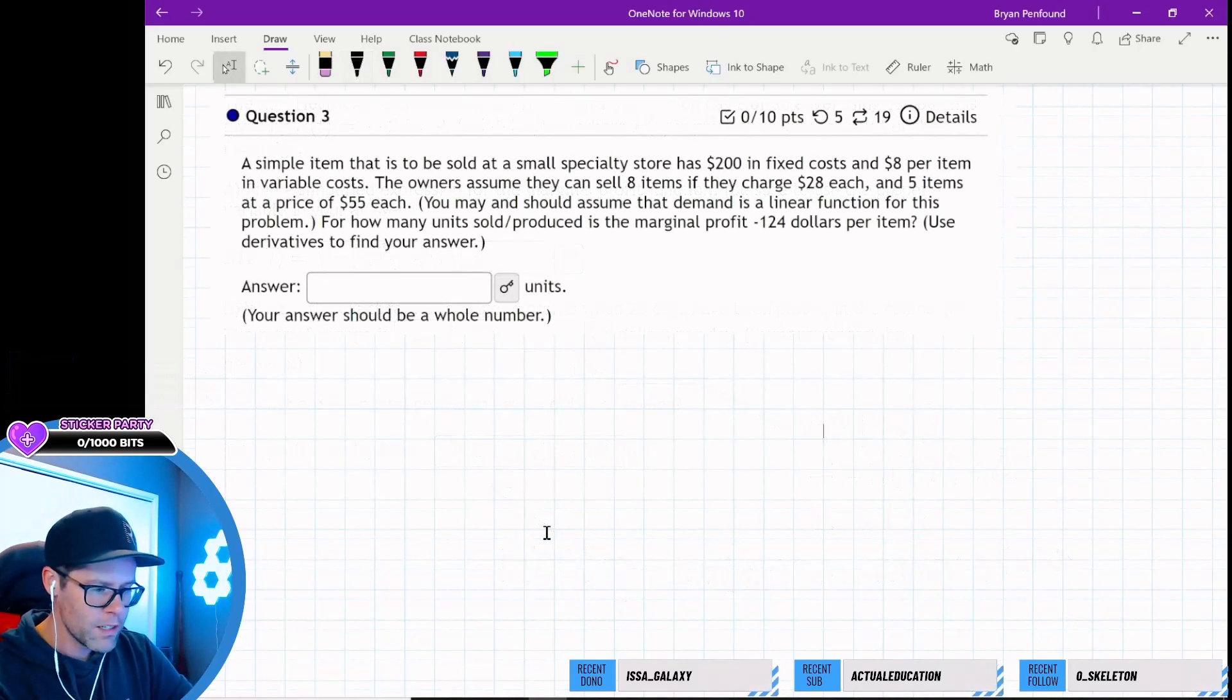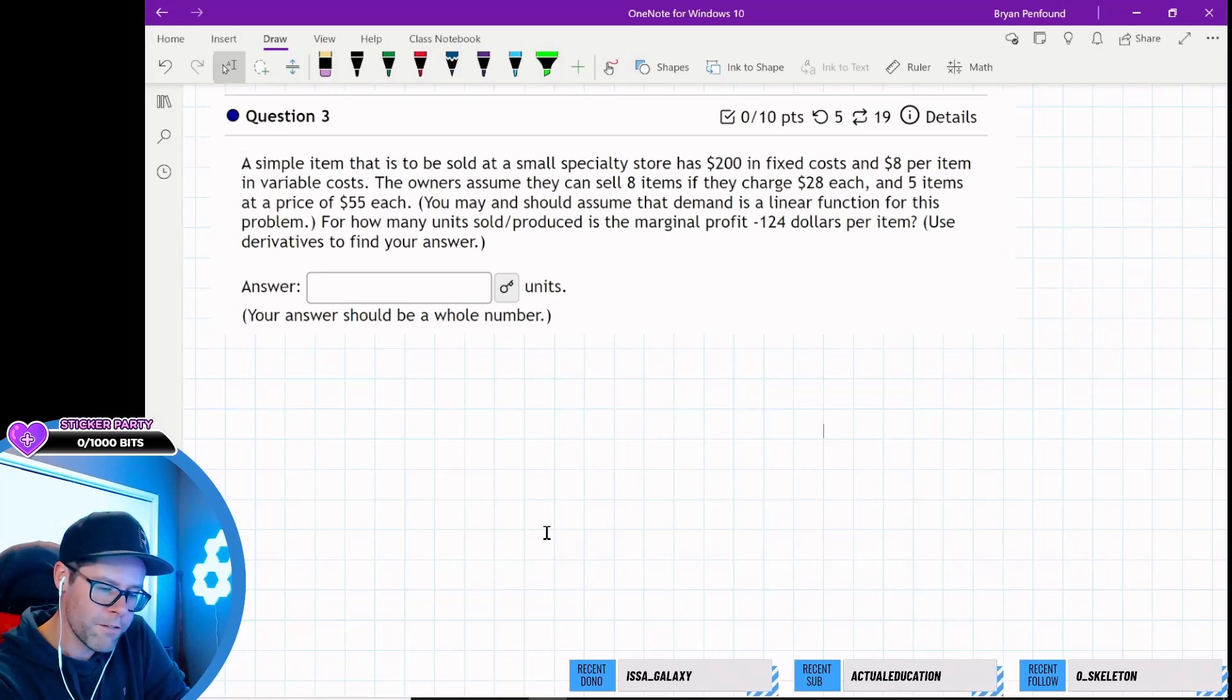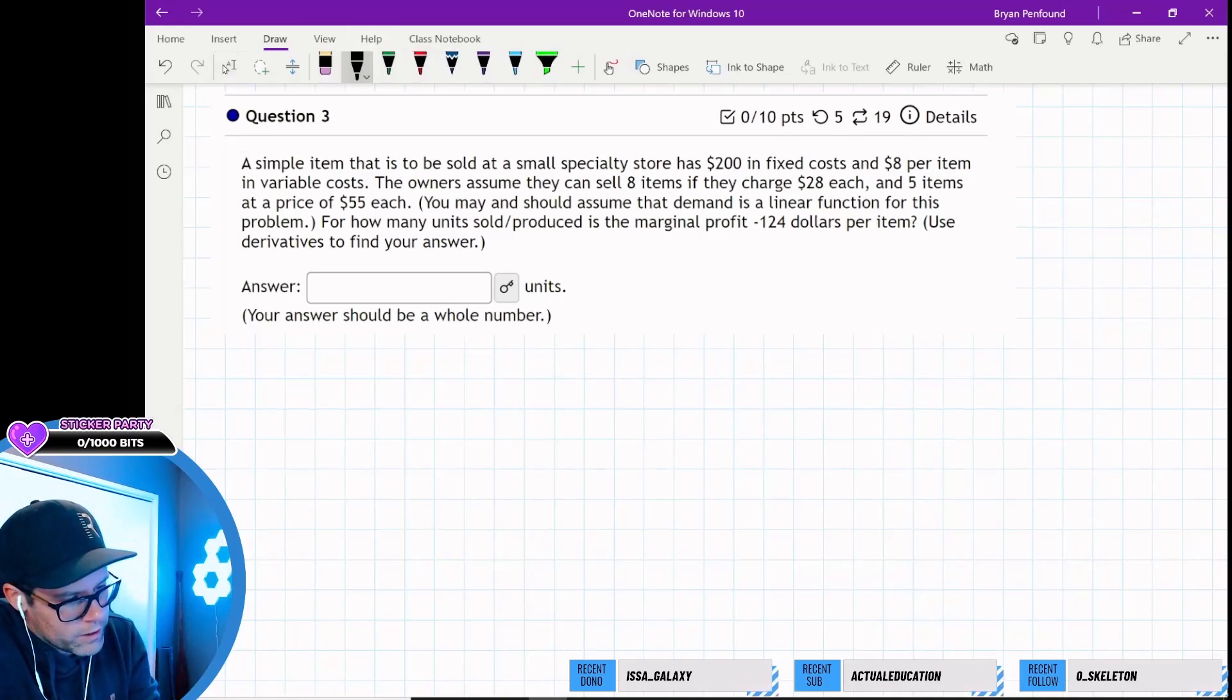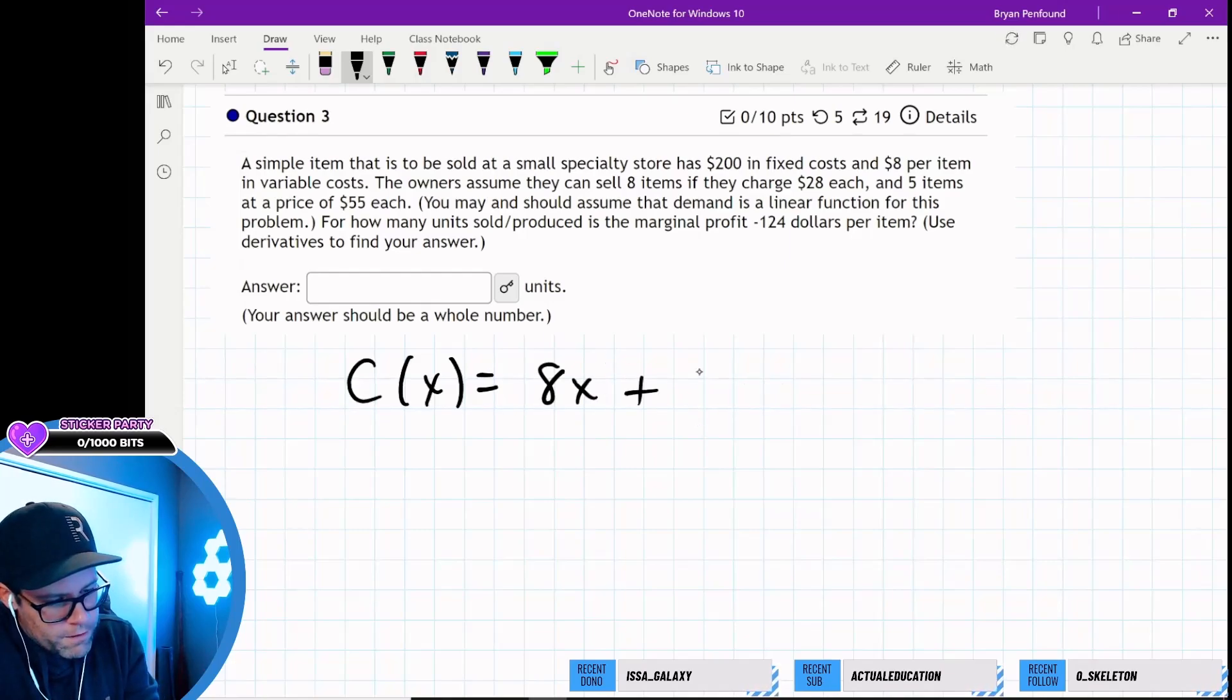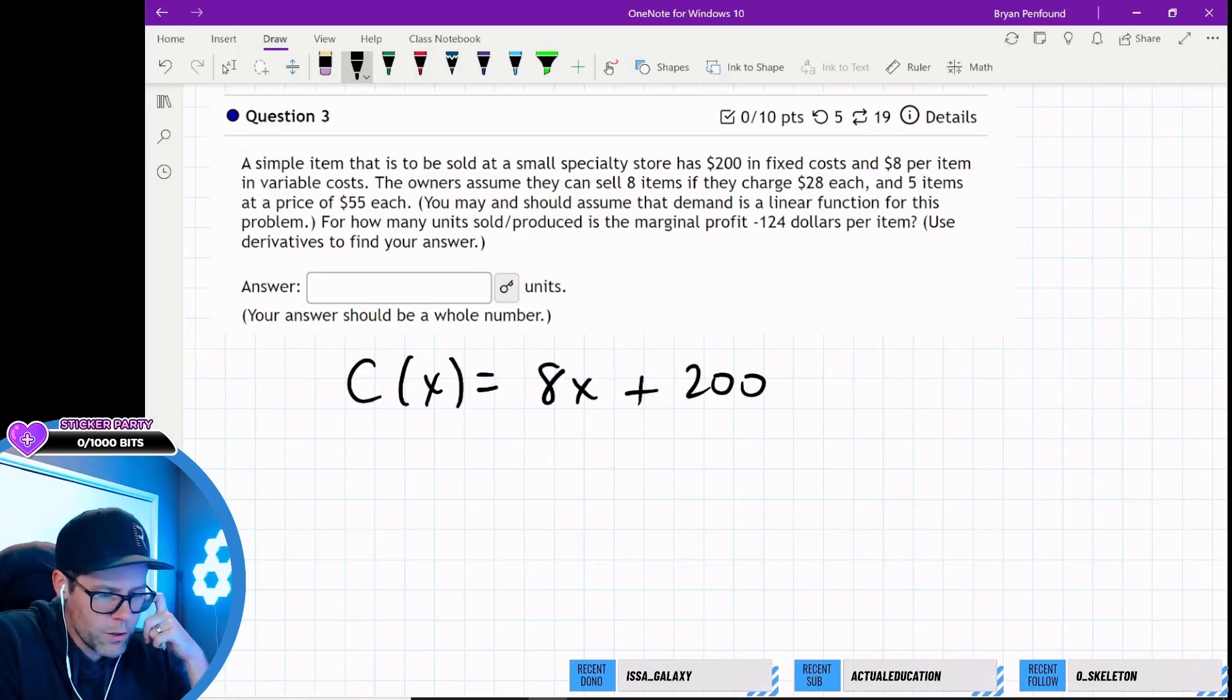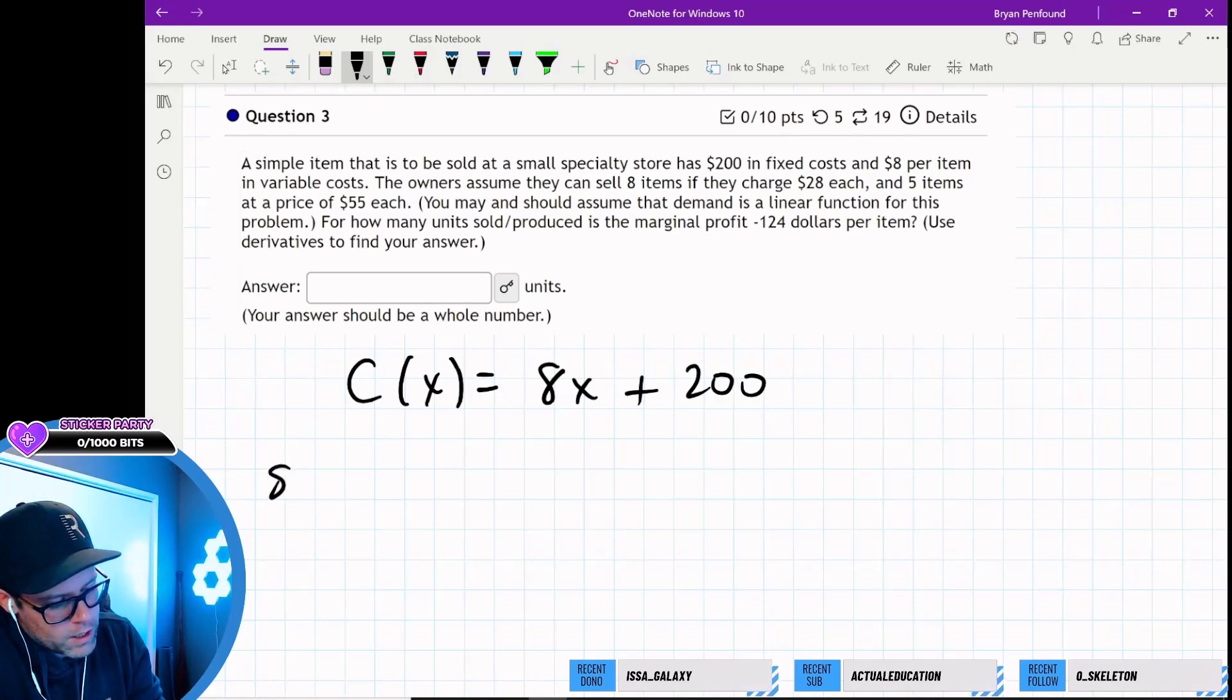So a simple item that is to be sold at a small specialty store has 200 in fixed costs and $8 per item in variable costs. So let's make the cost function since they've given us all of that information. So the cost function should be our variable costs per item plus the fixed costs. So here's our cost function. This is the demand function. They're trying to find the demand. So we can now talk about the slope of the demand function.